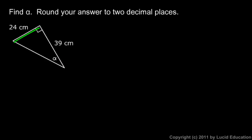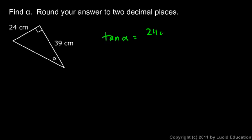The 24 centimeter side is opposite angle alpha, and the 39 centimeter side is adjacent. So I can say the tangent of alpha equals 24 centimeters over 39 centimeters — the units cancel, so it's just 24 over 39.